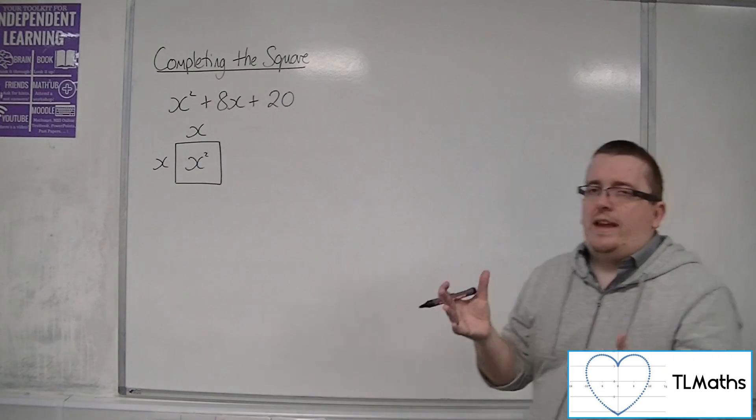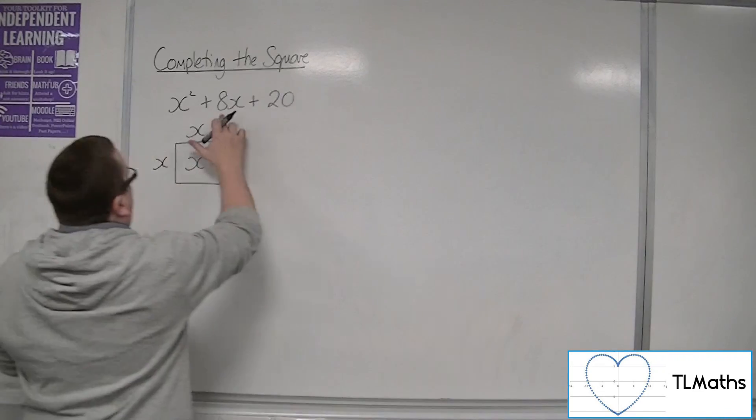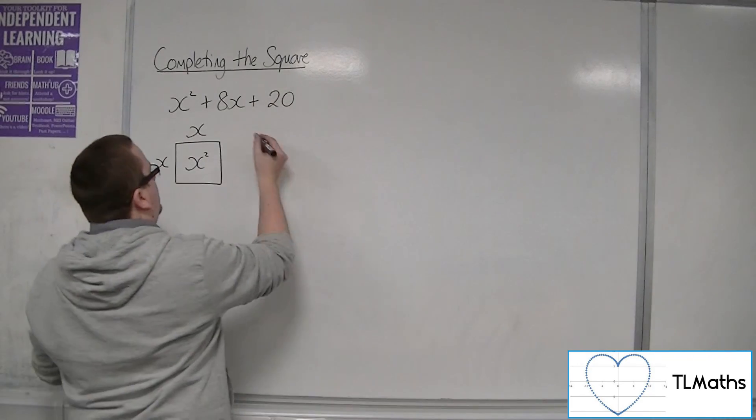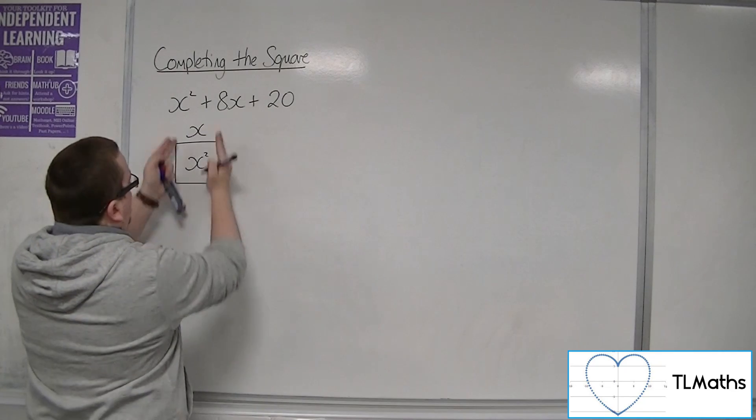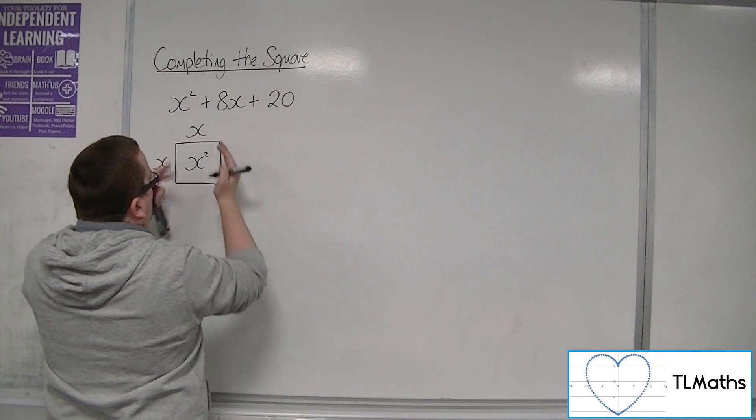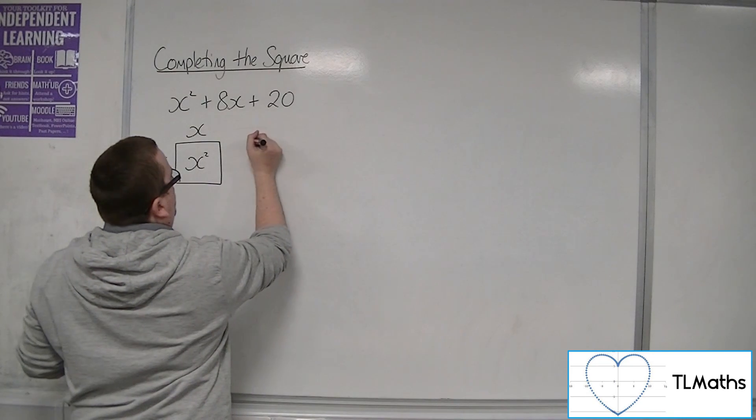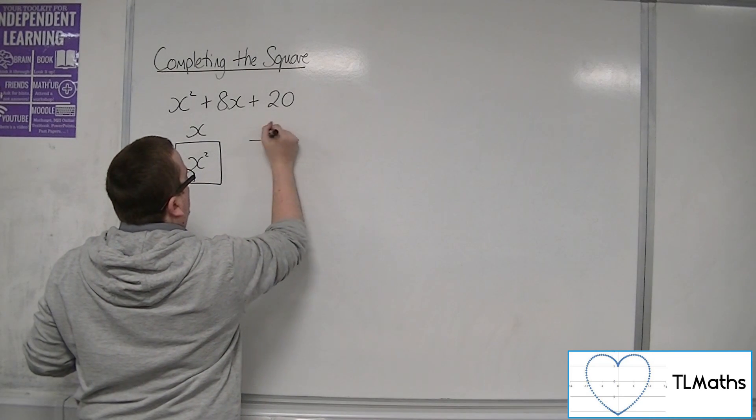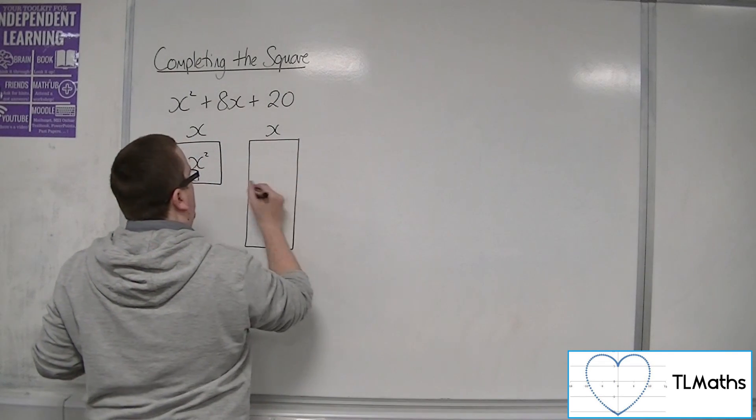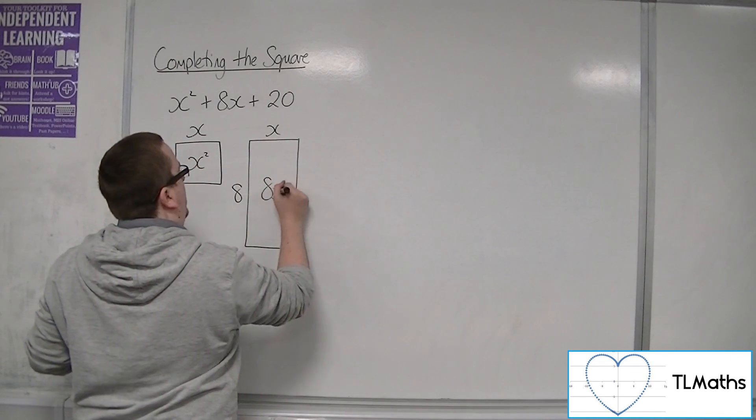And then we've got 8x. Well, 8 times x, there's got to be some kind of rectangular shape, because it's got to have the same kind of width dimension that we have here for the square, because we've got the x, but it's going to be 8 long. So we could draw it as x times 8. So something like that. And that would give us our 8x.